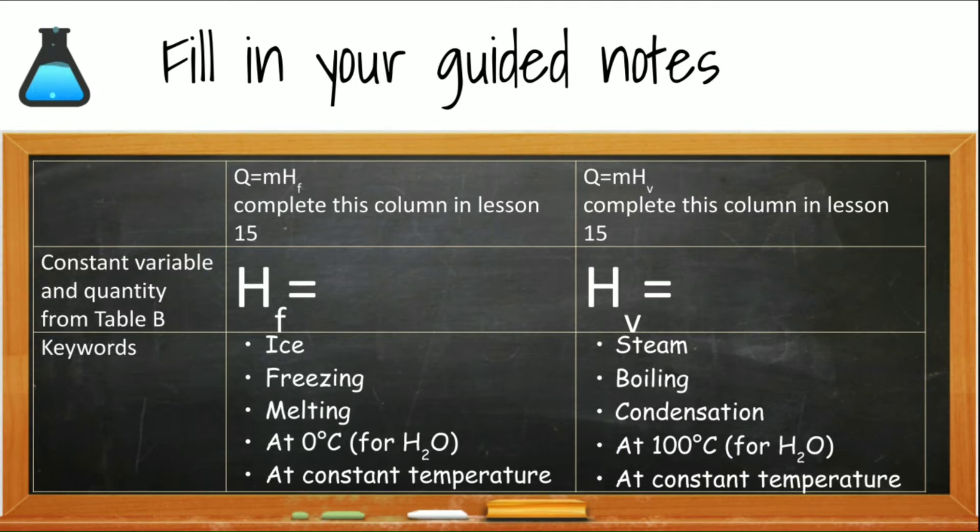Now, we will use the heat of vaporization equation when we see keywords like steam, boil, condense at 100 degrees Celsius for water and at constant temperature. Again, in your notes, make sure you look at table B on the very front of your reference table and record down the heat of vaporization for water.